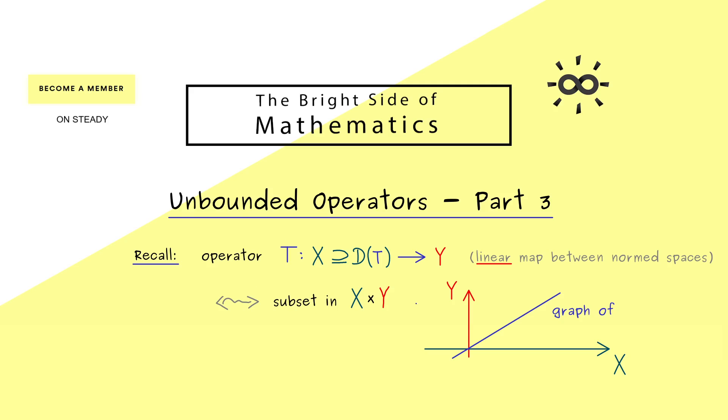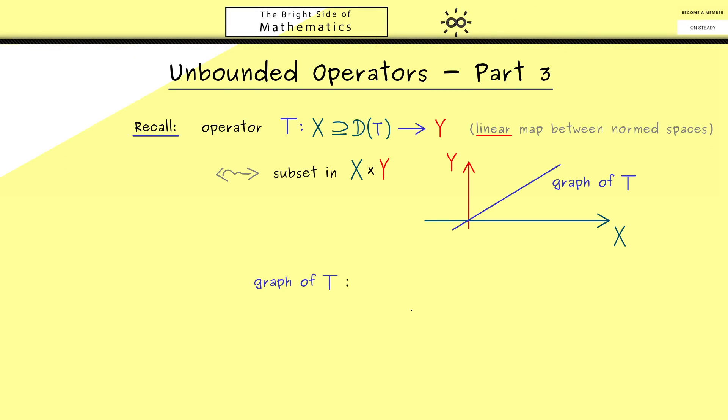Since this is a well-defined map, we can identify it with its graph. This is just a special subset in the Cartesian product X×Y. We can simply sketch it into a coordinate system. Since we have a linear mapping here, we should make it clear that we have a linear relation as a graph. Let's give this set a short name, call it G_T. We can define it as a subset of X×Y.